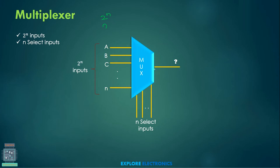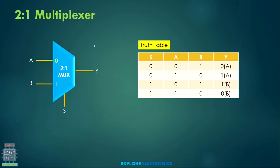There are different multiplexers available. The first one is the 2-to-1 multiplexer. In a 2-to-1 multiplexer, there are 2 inputs and only one output. The select line required here is 1, since 2 is 2 to the power of 1. So there are 2 inputs and 1 select line.